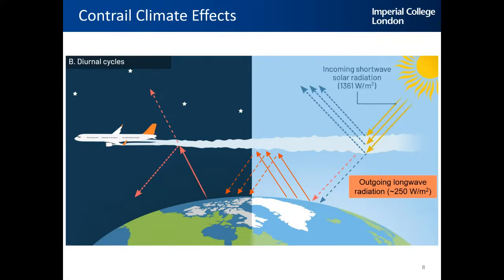How do contrails impact the environment? There are two components. During the day, contrails reflect incoming solar radiation back to space and can cause a cooling effect — though this doesn't necessarily mean they will always be cooling. At the same time, there is a warming component where contrails act as a greenhouse effect, trapping and re-emitting outgoing longwave radiation back to the surface of the Earth at all times.